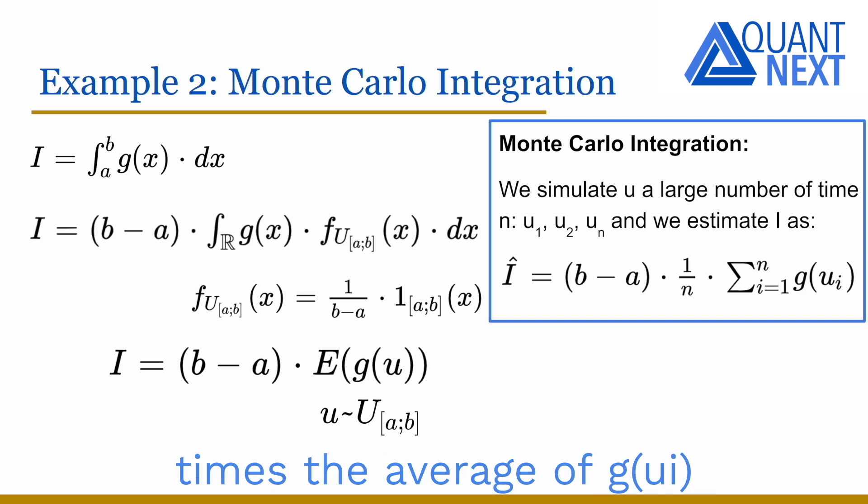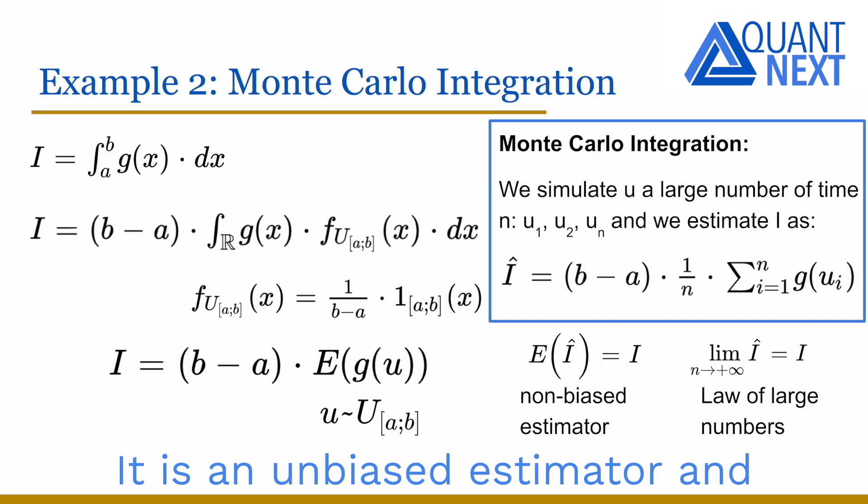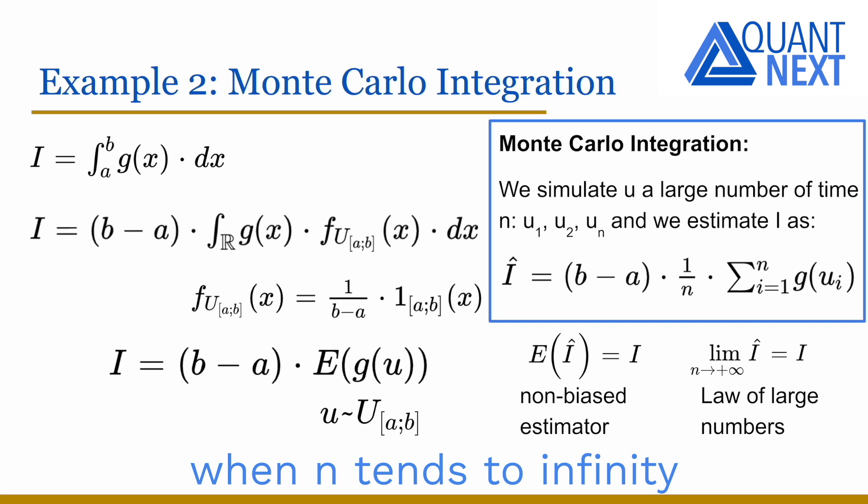We simulate u a large number of times and we estimate i as b minus a times the average of g ui on the n simulations. It is a non-biased estimator and we know that it converts to the true value i when n turns to infinity by the law of large numbers.